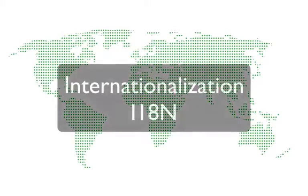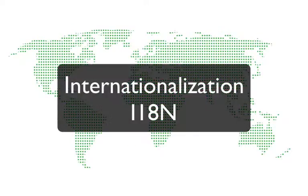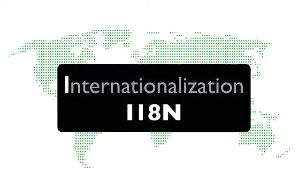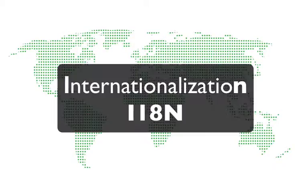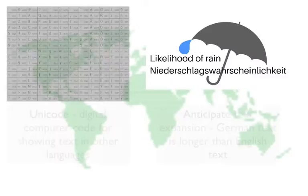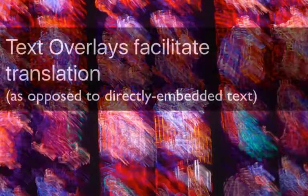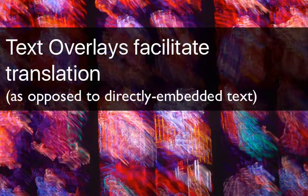This is internationalization, often stylized as I18N because it starts with an I, ends with an N, and has 18 letters in the middle. This term describes the process of preparing a product on a developmental and engineering level in order to sell that product in other countries with minimal adaptation.